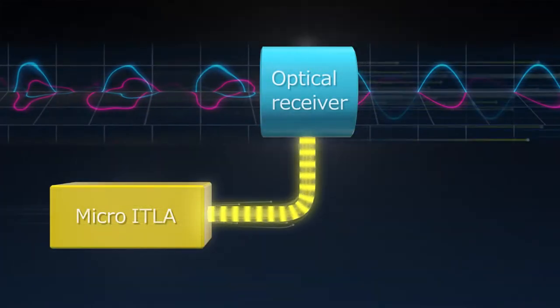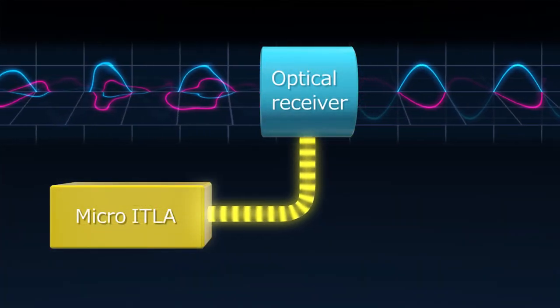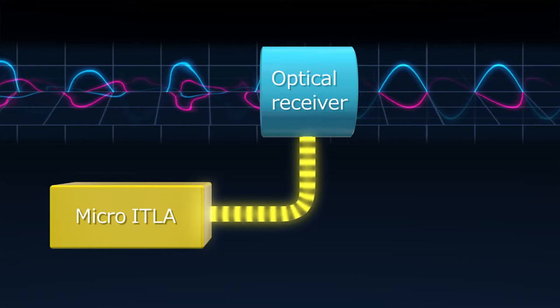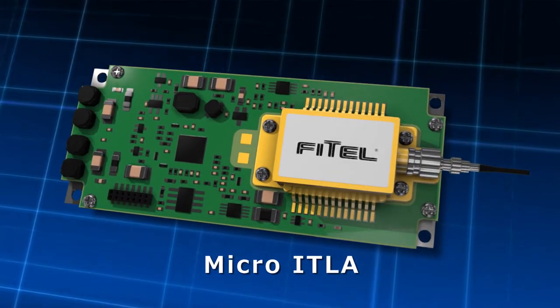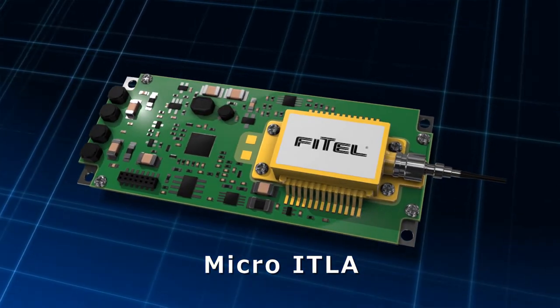But as distance increases, waveforms become dispersed. The receivers of these damaged optical signals must apply local oscillation light to read their original information. One key technology for this purpose is ITLA, which applies local oscillation light to recover damaged signals. Our micro-ITLA is a smaller profile, lower power-consuming laser source that enables optical devices to deliver high performance.